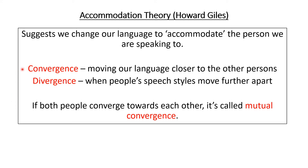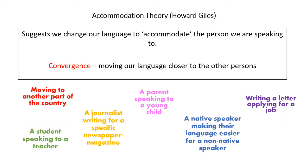There are two parts to this theory: the first being convergence, where we change and adapt our language to be more similar to someone else, and divergence, where we purposely move our language styles further apart from others. If two people converge or move their language styles closer to each other, this is called mutual convergence. Let's start by looking at the convergence section of this theory, where we're purposely moving our language to be more similar to someone else's.